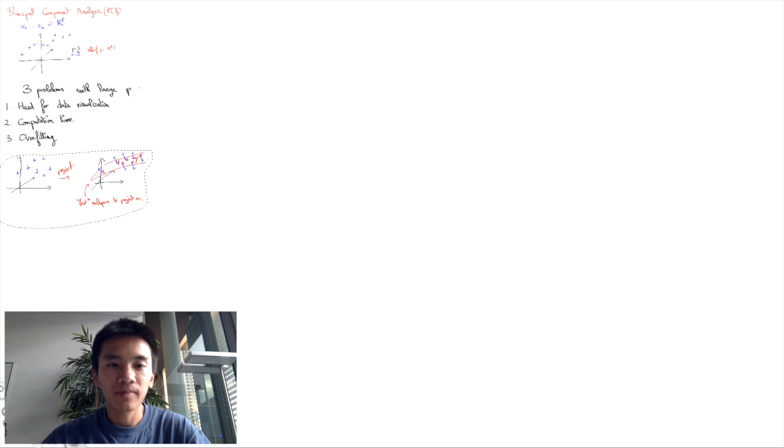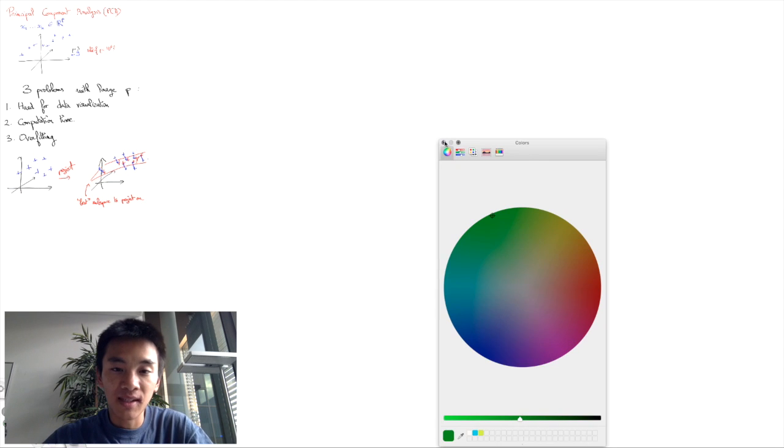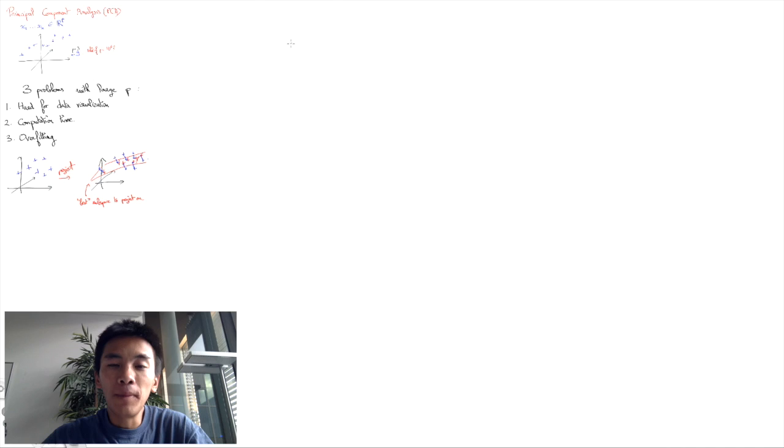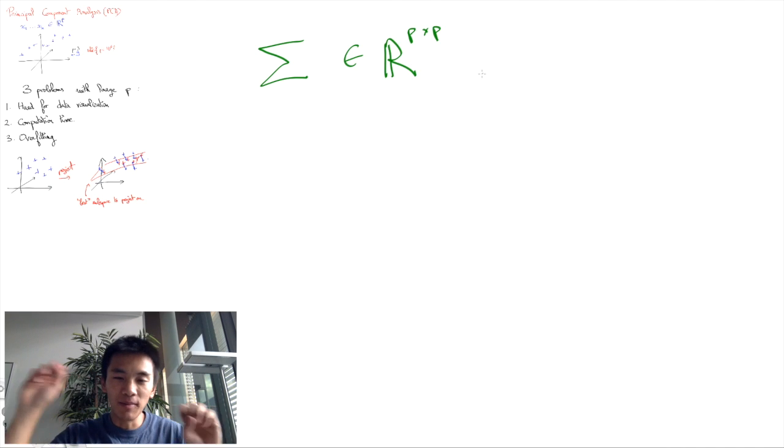The covariance matrix sigma is going to be a p by p matrix. We recall that p was the dimension of the feature space of the vectors x1 and x2 and so on. Each of these vectors is p dimensional.